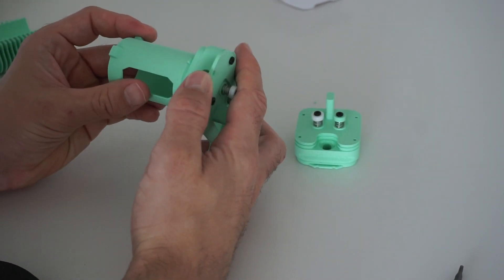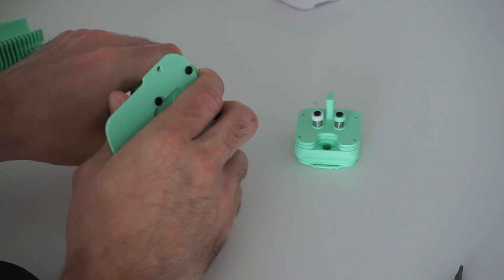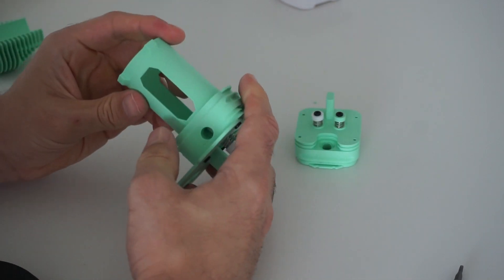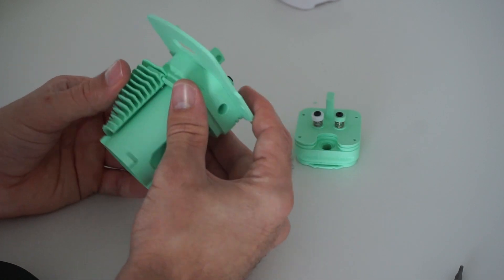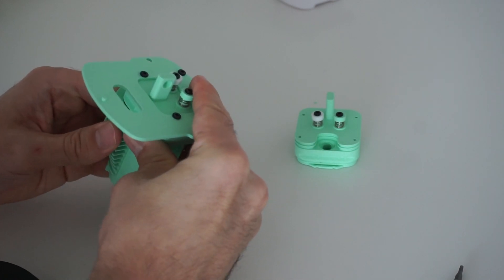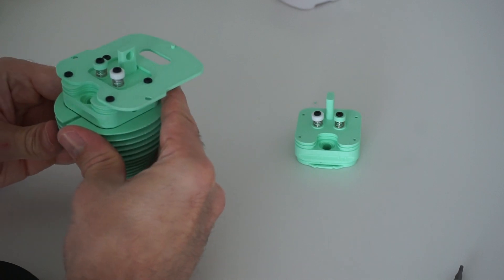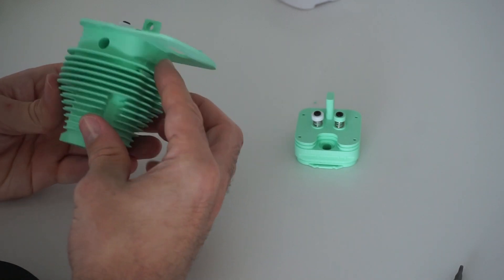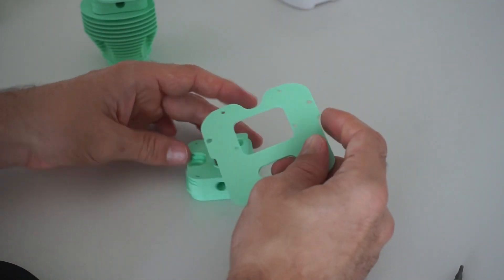Now we're going to take the cylinder head and snap it into place and then these cooling fins should slide onto here, they also snap in place. Very good, very nice. Now for the second one.